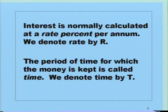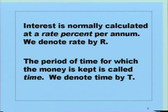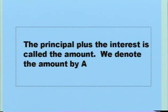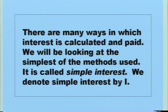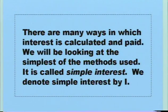Interest is normally calculated at a rate per cent per annum. We denote the rate by capital R. The period of time for which money is kept is called time. Time is denoted by capital T. The principal plus the interest is called the amount. We denote the amount by capital A. There are many ways in which interest is calculated and paid. We will be looking at the simplest of the methods used — it is called simple interest. We denote simple interest by a capital I.